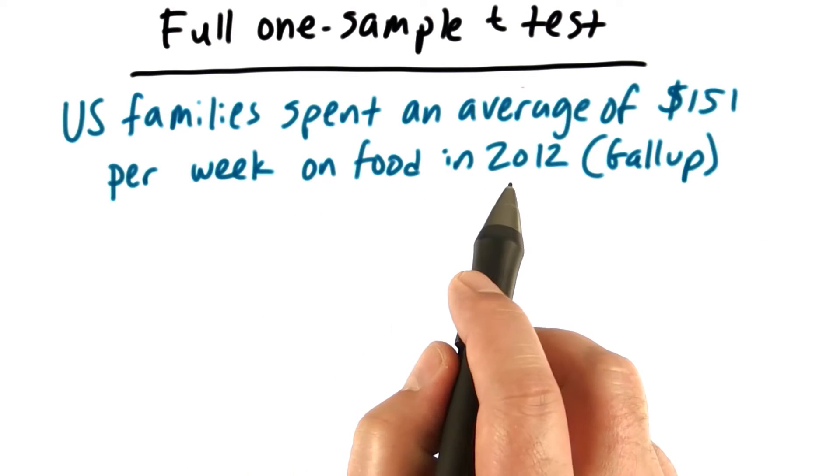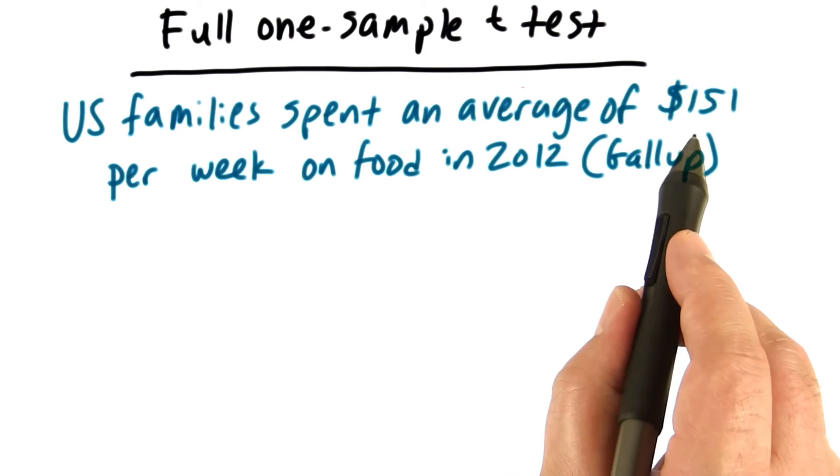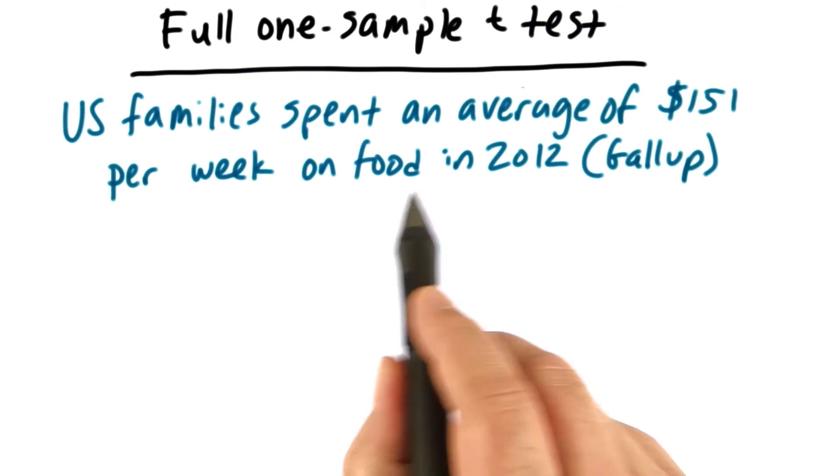Here's the start of our problem. According to the Gallup organization, US families reported spending an average of $151 per week on food in 2012.